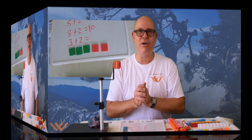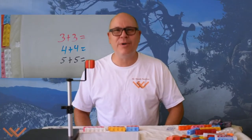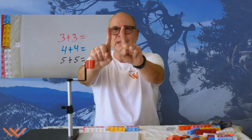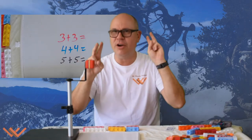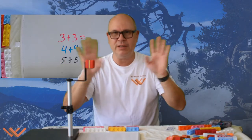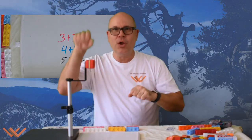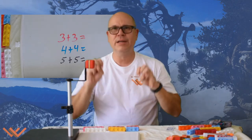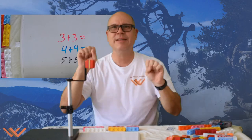Next we're going to move on to small doubles. Who's ready for small doubles? Everyone, hold up your hands out in front of your face like this. We're going to go through this really quick. One and one make two. Let's do it together and ramp up: one and one make two, two and two make four, three and three make six, four and four make eight, and five and five make ten.